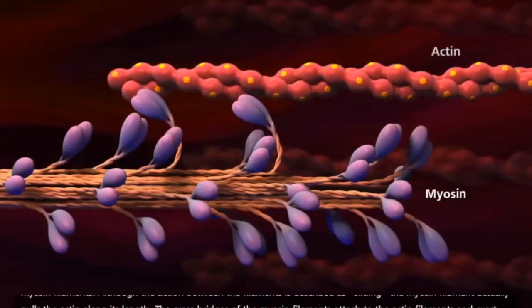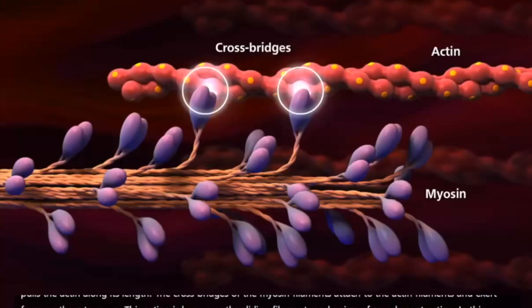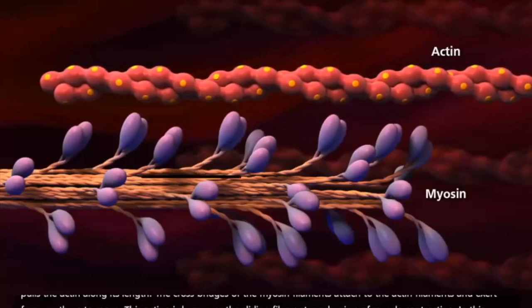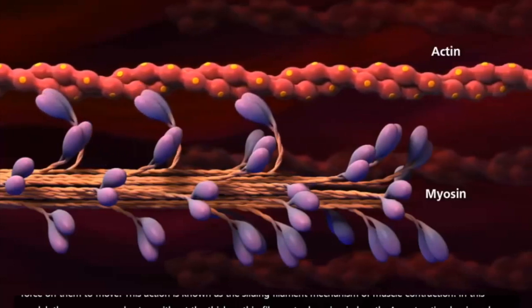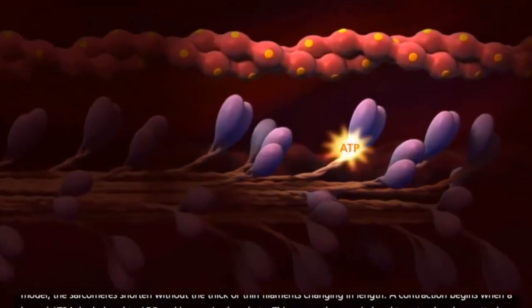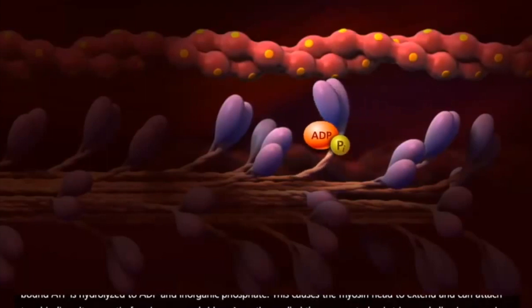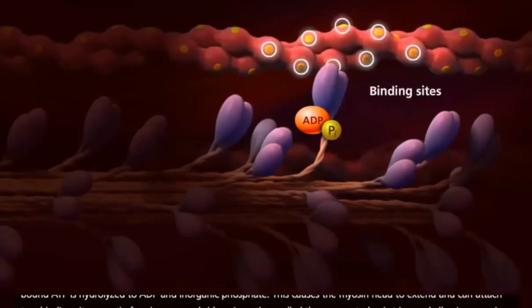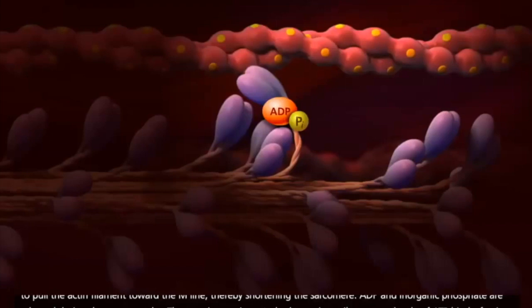Although the action between the filaments is described as sliding, the myosin filament actually pulls the actin along its length. The cross bridges of the myosin filaments attach to the actin filaments and exert force on them to move. This action is known as the sliding filament mechanism of muscle contraction. In this model, the sarcomeres shorten without the thick or thin filaments changing in length. A contraction begins when a bound ATP is hydrolyzed to ADP and inorganic phosphate. This causes the myosin head to extend and can attach to a binding site on actin, forming a cross bridge. An action called the power stroke is triggered, allowing myosin to pull the actin filament toward the M line, thereby shortening the sarcomere. ADP and inorganic phosphate are released during the power stroke.